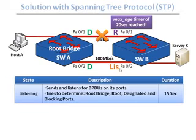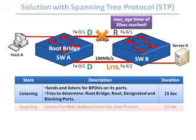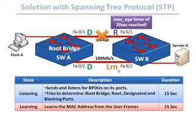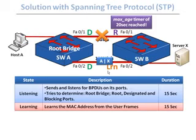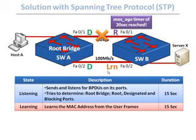After the listening state, switch B determines its new root port, but the port does not go to forwarding yet. Instead it enters the learning state. In the learning state, the switch reads source MAC addresses of all received traffic and populates its MAC address table through the new port. However, it discards the packets rather than forwarding them to the destination.